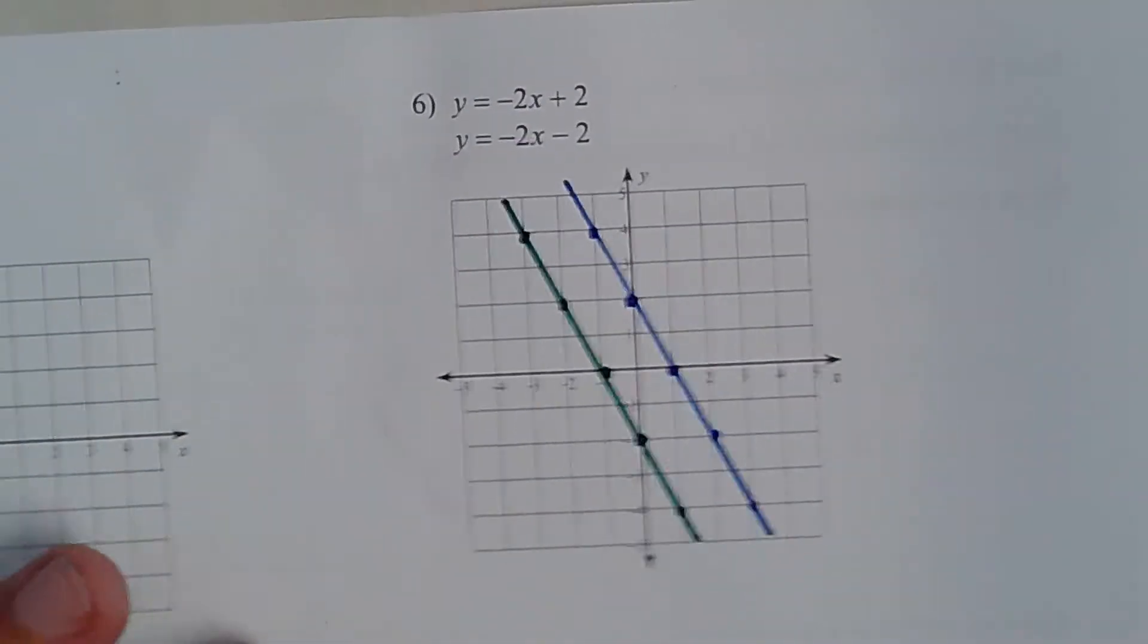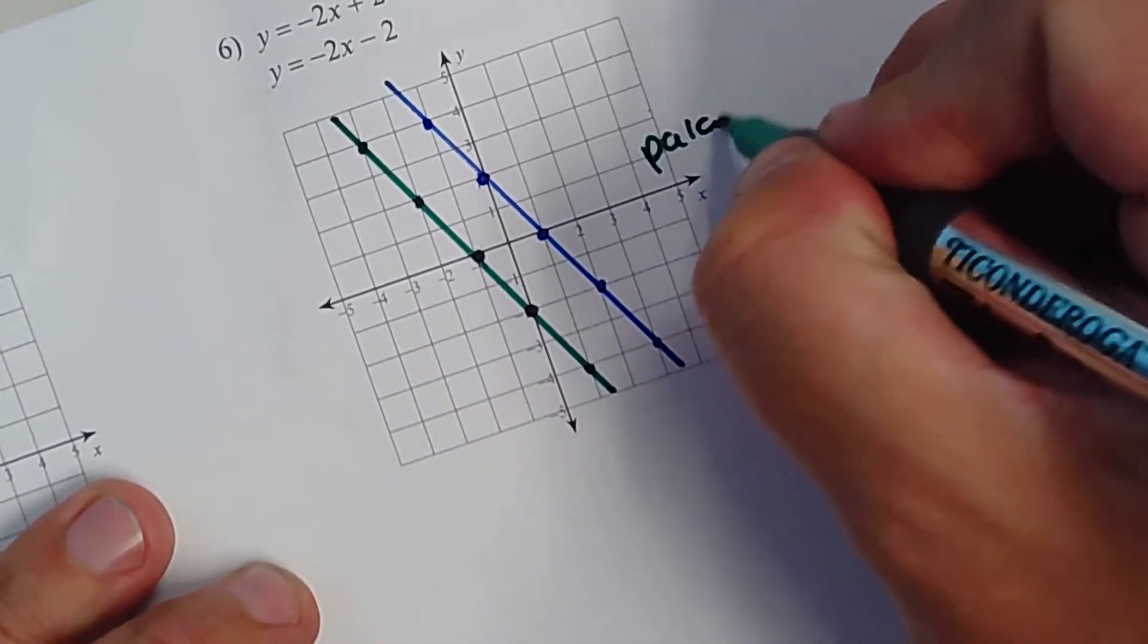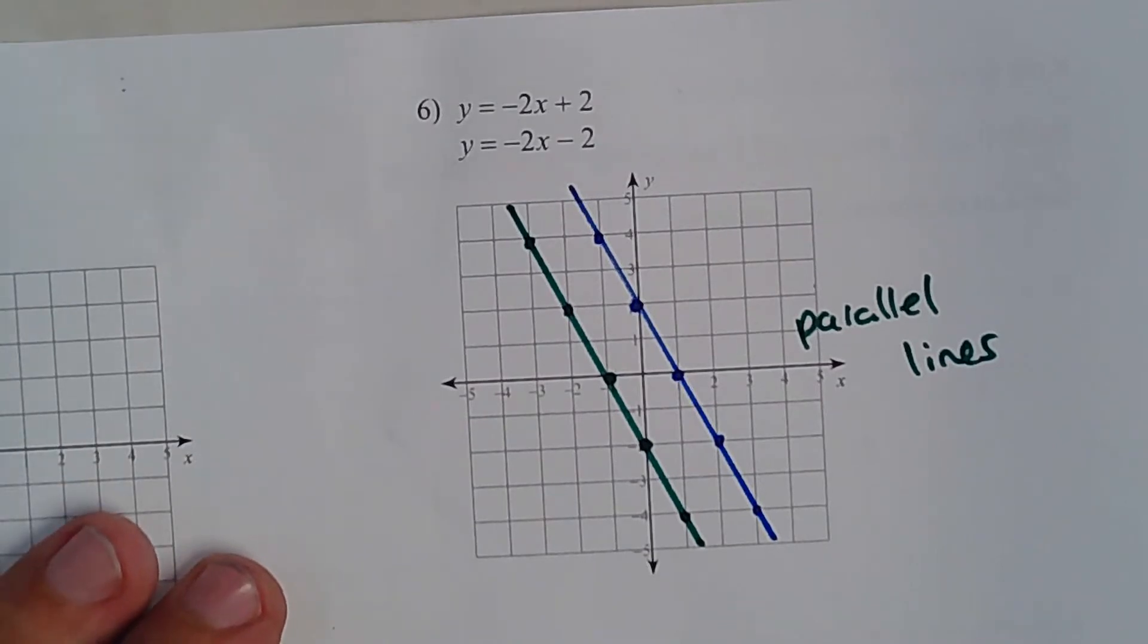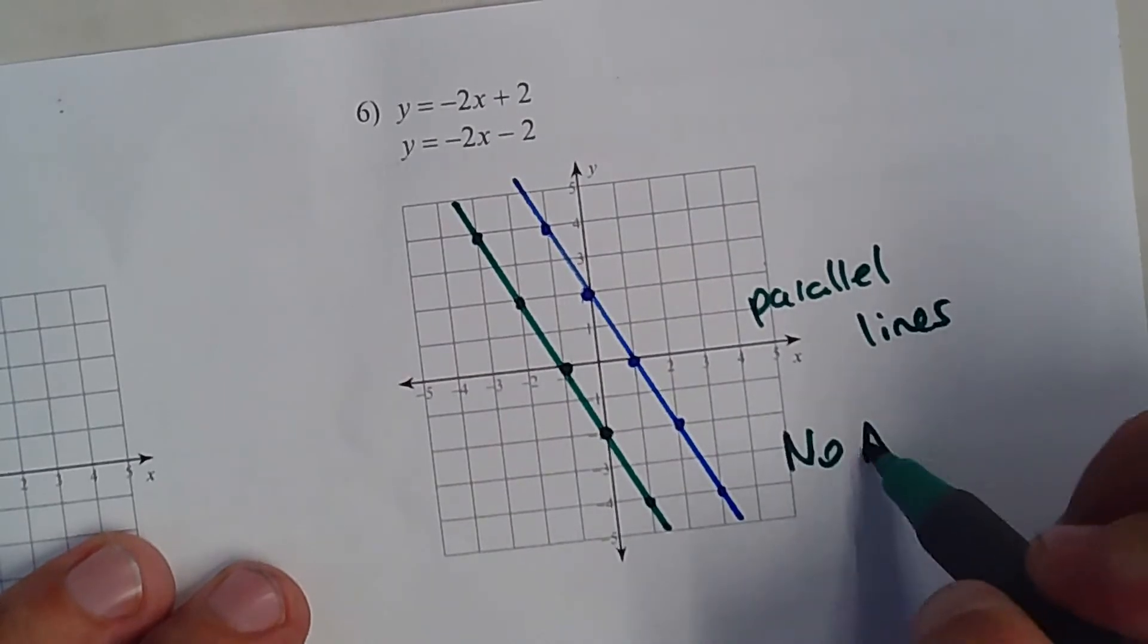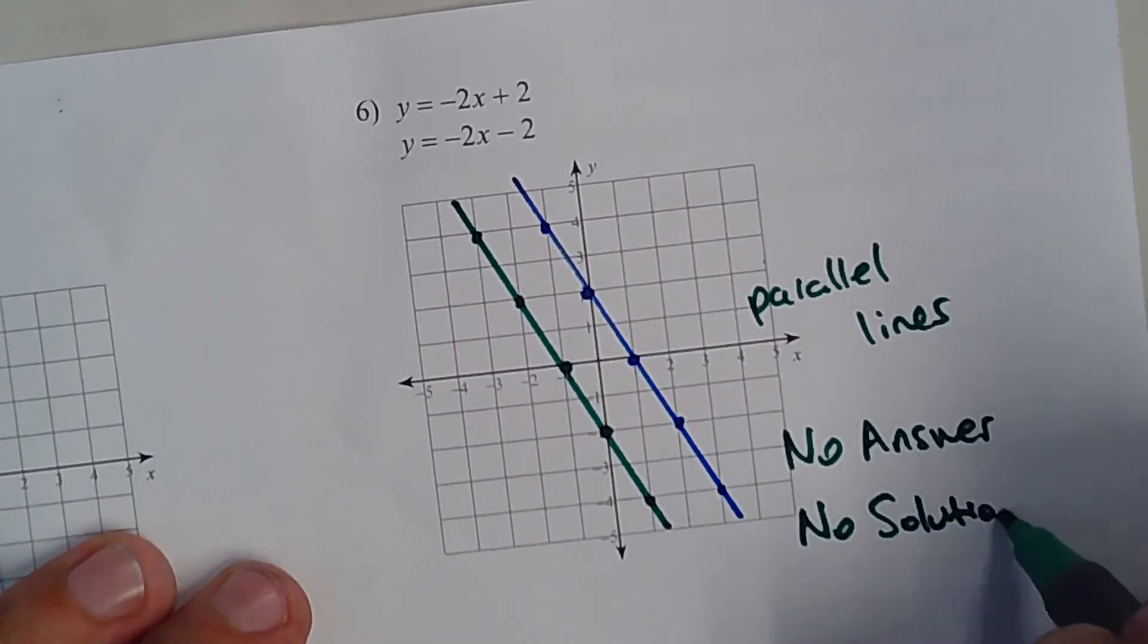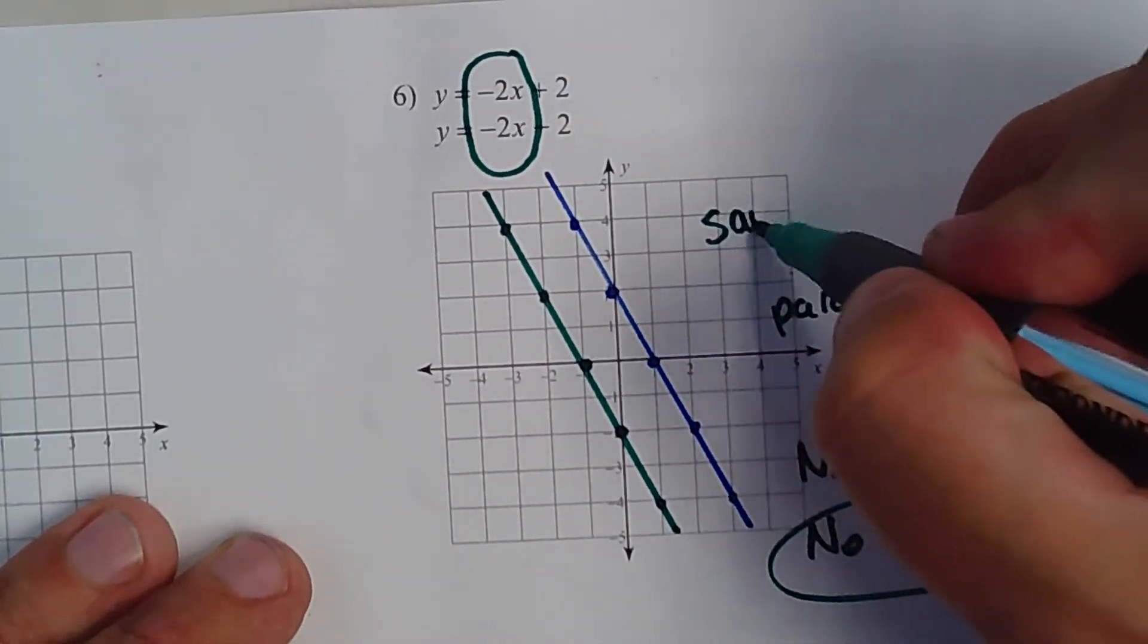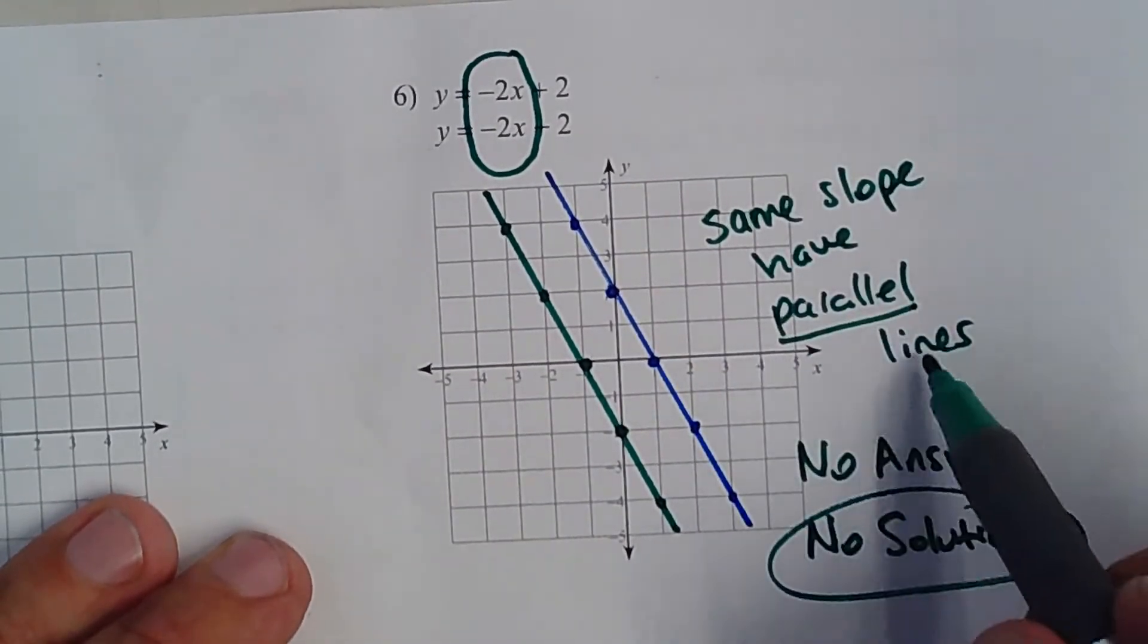And all right, guys. Where do these lines touch? Nowhere. These are considered parallel lines. And the thing I wanted you to get to at some point is to understand, and we didn't cover this today because it was a short period, but in order to see parallel lines right away, this answer, where is the answer? There is no answer. So you can write no answer. But in the math book, they're going to write no solution. That would be your final answer. No solution. But you should notice the reason there's no solution is because same slopes have parallel lines.